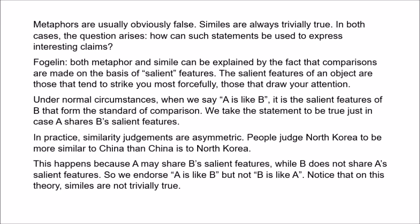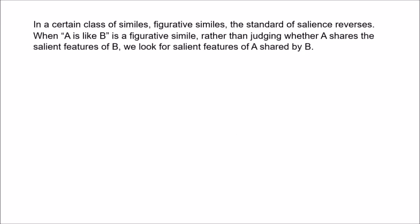If Fogelin is right about all this, then we immediately defuse the problems for the simile view. Similes are not trivially true. In context, we judge 'A is like B' by asking whether A shares the salient features of B, which it may not do. Now, in a certain class of similes — what Fogelin calls figurative similes — the standard of salience, in a sense, reverses. So when 'A is like B' is a figurative simile, rather than looking for the salient features of B, we look for the salient features of A.